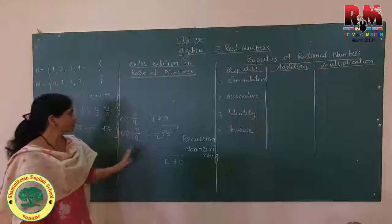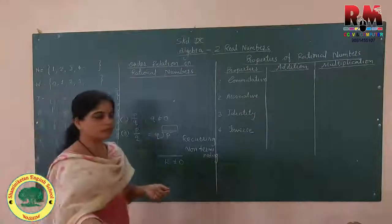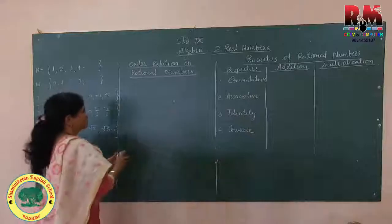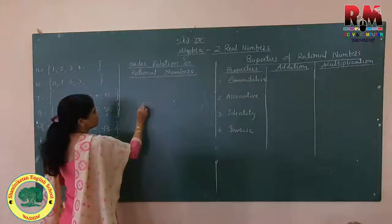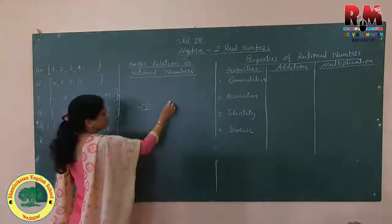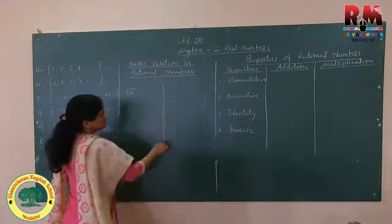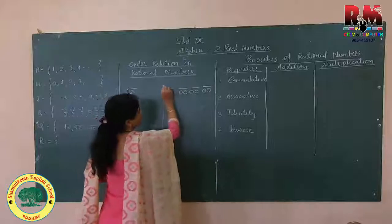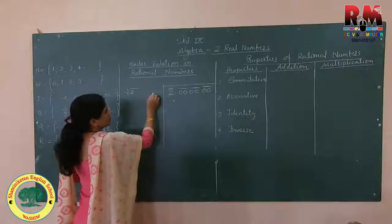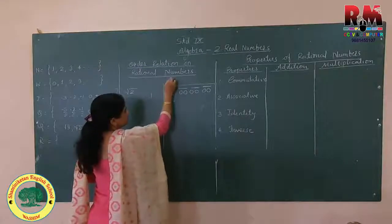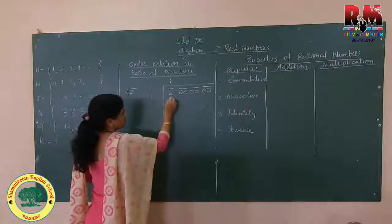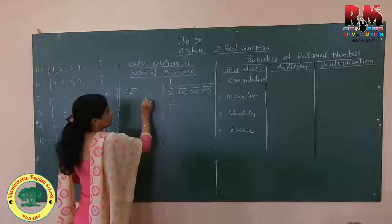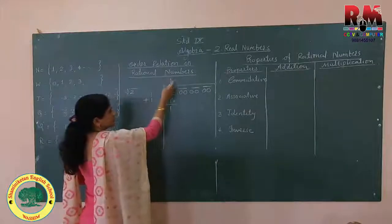In the previous lesson we also saw what is meant by irrational numbers. Irrational numbers — for example, if we find the value of root 2, the method is given in your textbook. We take one number, the same number in the quotient, and multiply: 1 into 1 is 1. Subtracting: 2 minus 1 is 1. The next step is important.